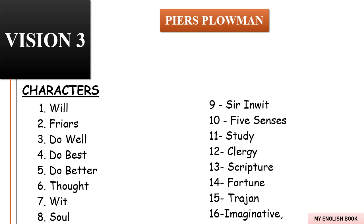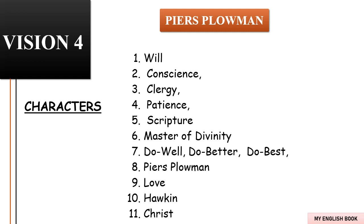Will then awakes from his dream within a dream back into his single outer dream, where he meets a man named Imaginative, who answers Will's question about Trajan — specifically how a person who has not been baptized can reach heaven. Cutting their discussion short, Imaginative disappears and Will awakes. This is the end of Vision Three.